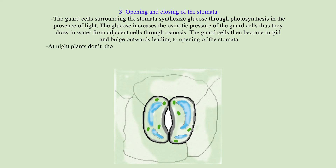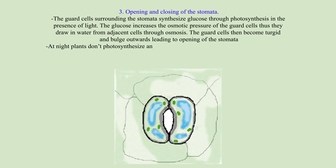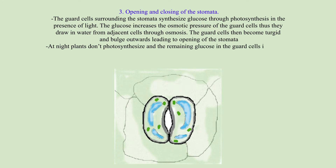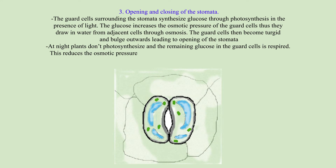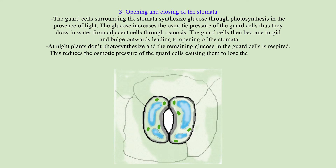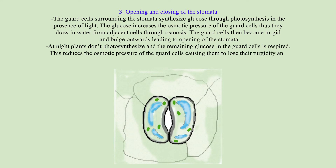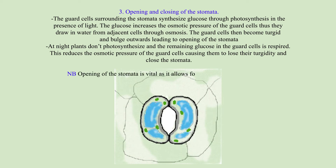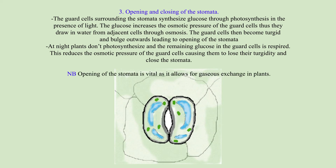At night, plants don't photosynthesize and the remaining glucose in the guard cells is respired. This reduces the osmotic pressure of the guard cells, causing them to lose their turgidity and close the stomata. NB: Opening of the stomata is vital as it allows for gaseous exchange in plants.